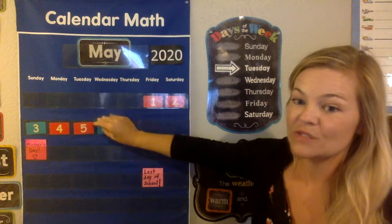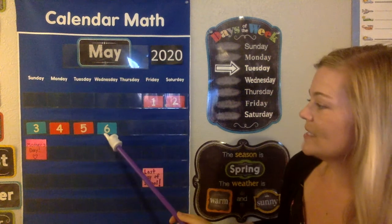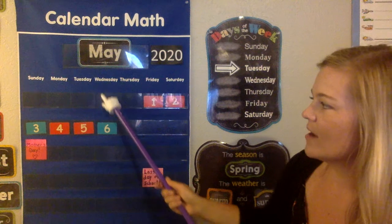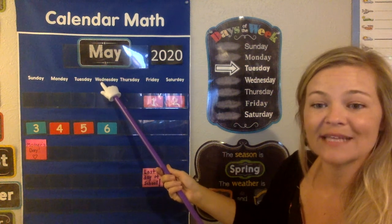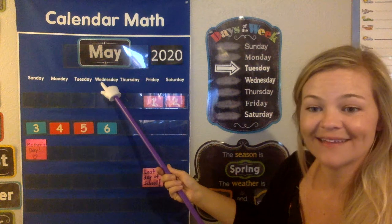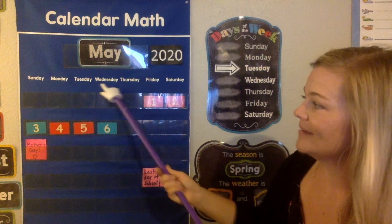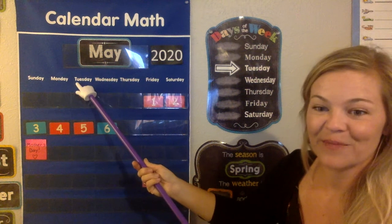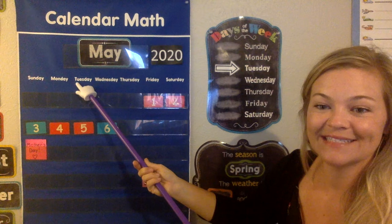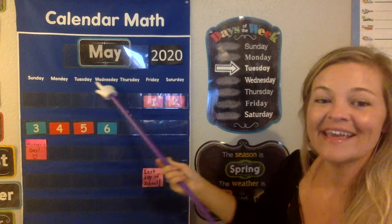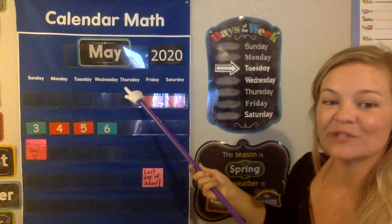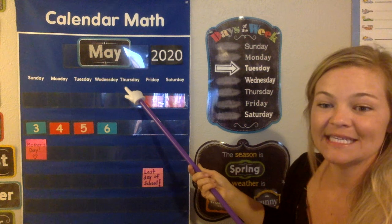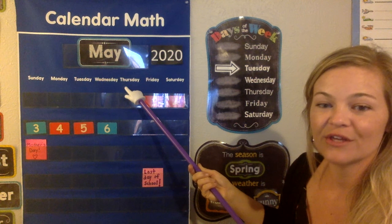Now let's do the day of the week. We point to the date and we go up. It starts with a W, and W makes a 'wah' sound. So that means today is Wednesday. What day was yesterday? It starts with a T. Tuesday. If today is Wednesday, what day will tomorrow be? It starts with T-H. Thursday.